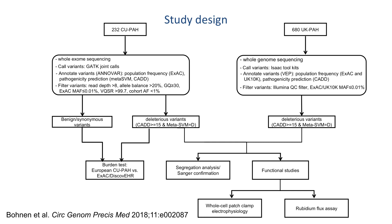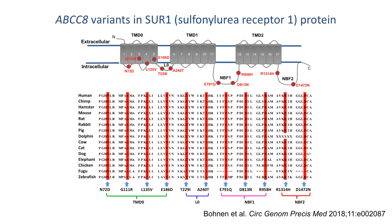The authors then undertook functional studies, namely whole-cell patch clamp electrophysiology and rubidium flux assays. Alignment of the ABCC8 sequence revealed that all identified missense variants occur at amino acid residues conserved across species and in critical domains in the protein product, sulfonylurea receptor 1, or SUR1, as shown here.